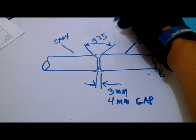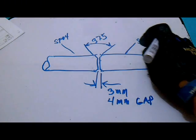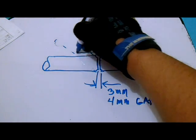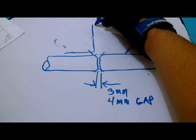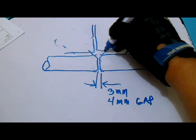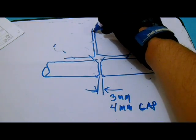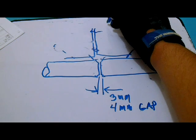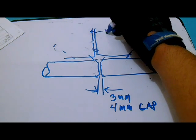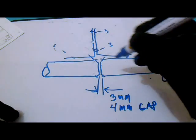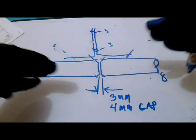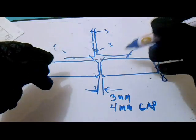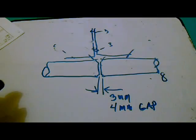Check the squareness here with a triangle. We have a triangle here and also triangle here. If this distance is for example 3 and 3 and 3, then check again from the other side. Check the squareness, and if the squareness is also 3 by 3, these pipes are already straight.